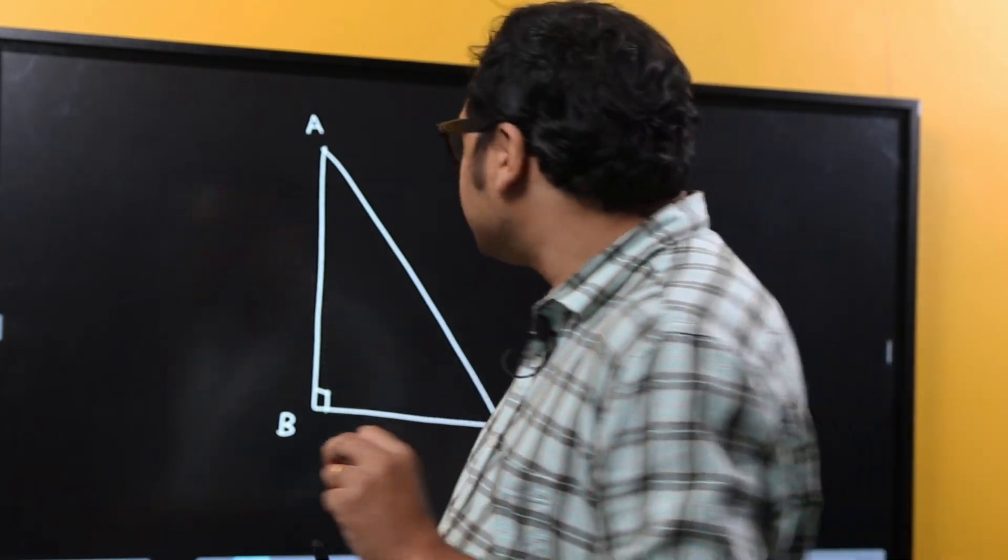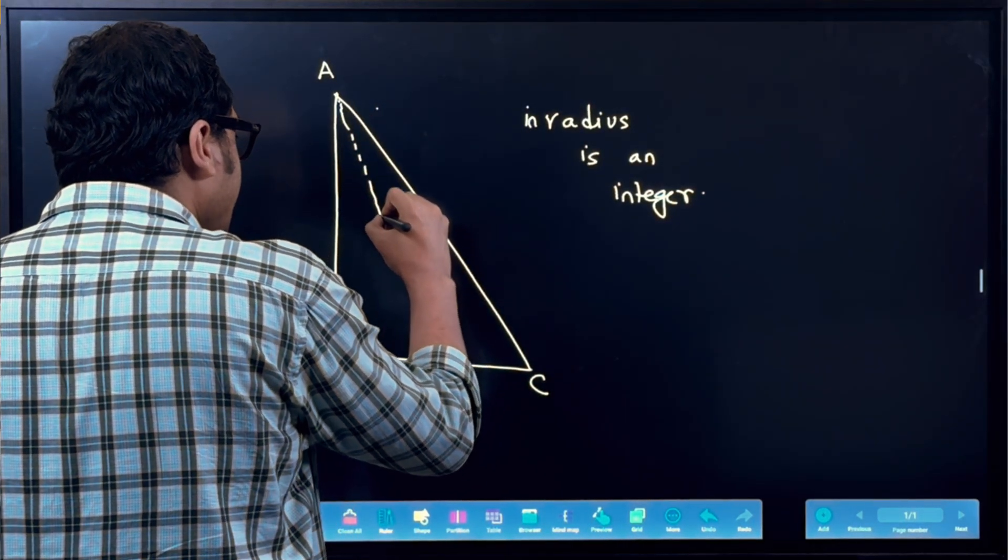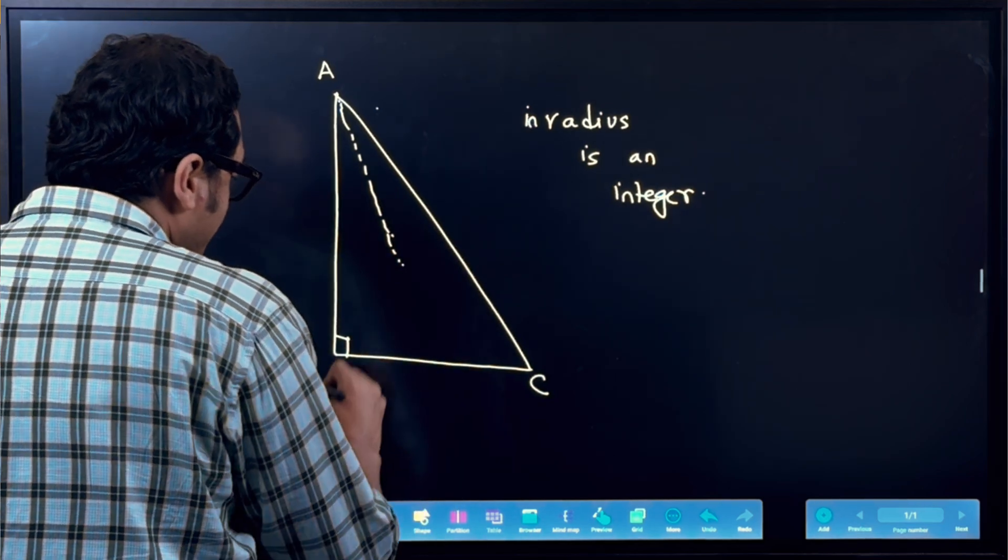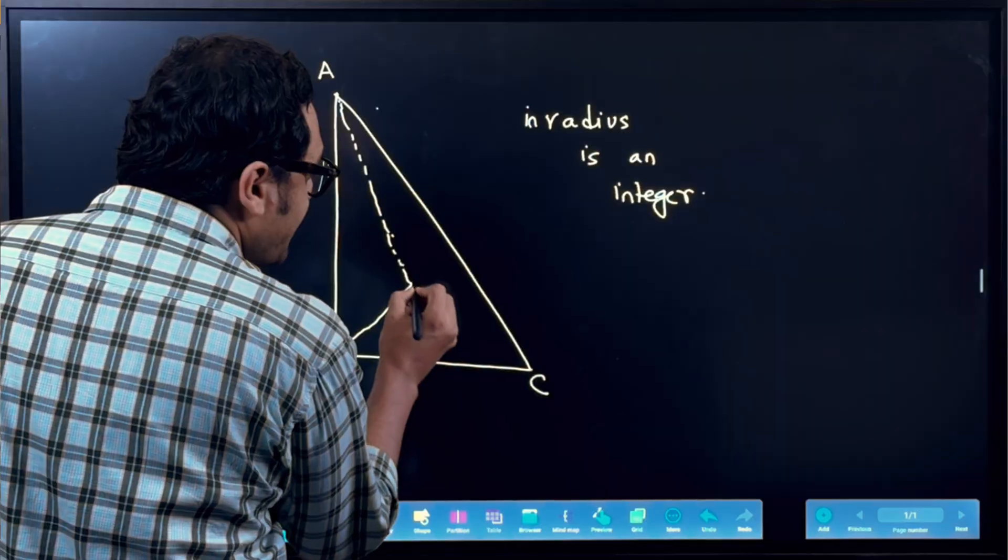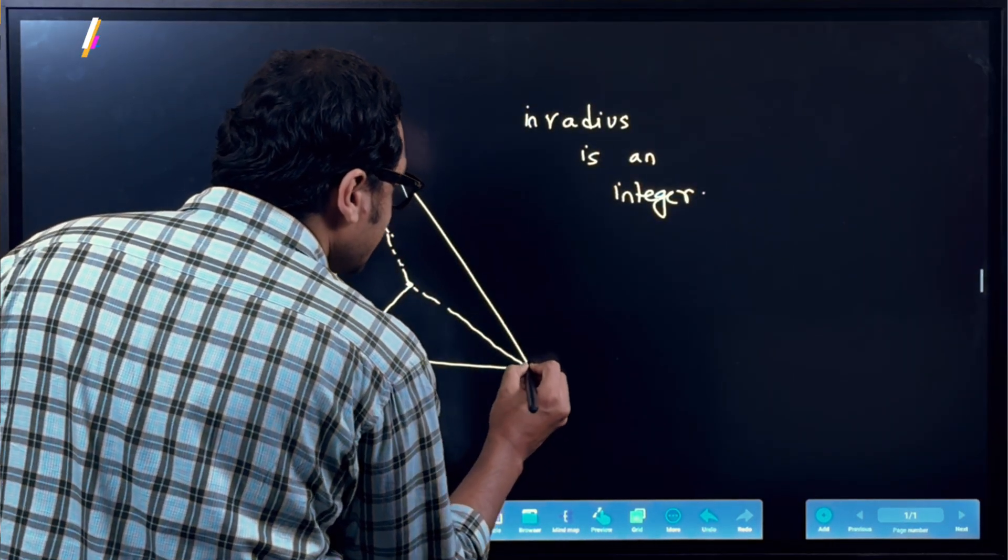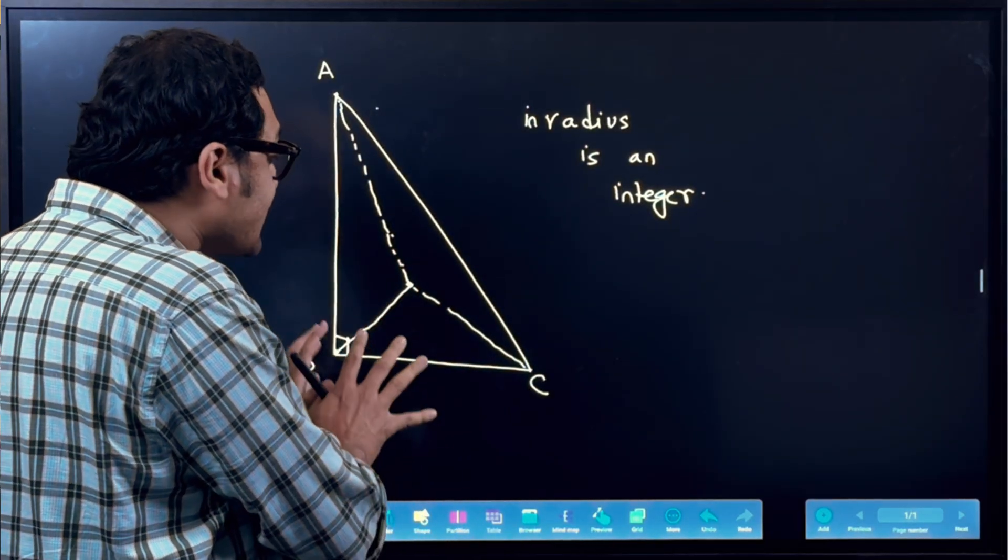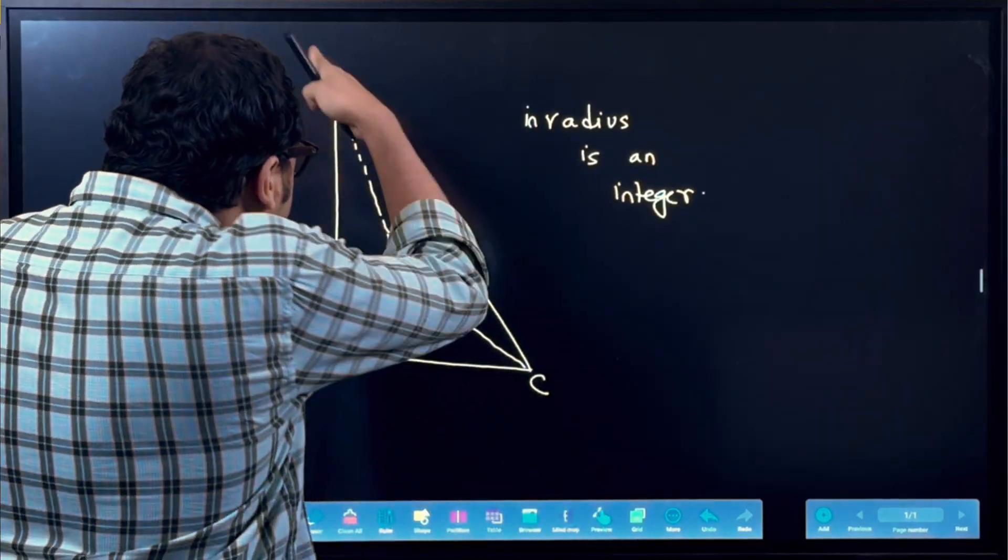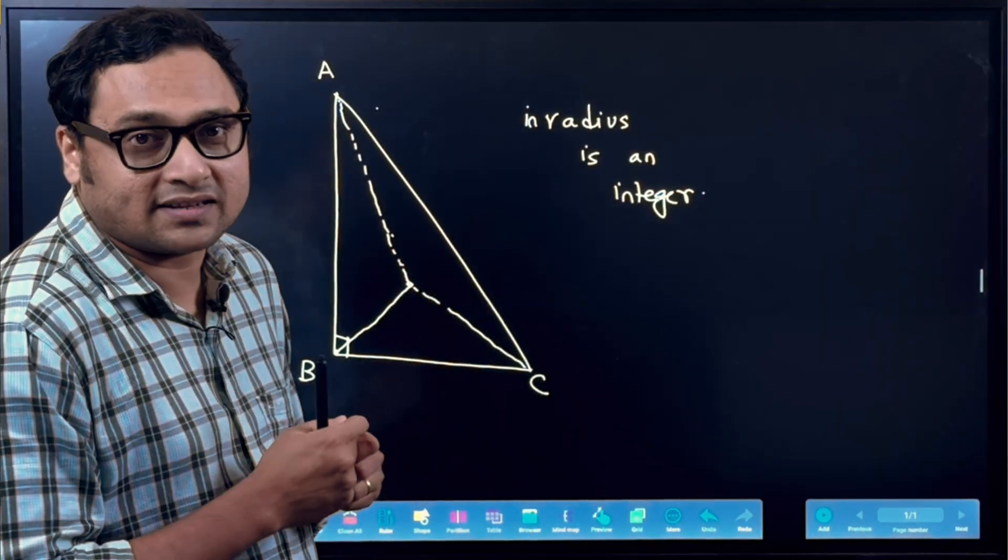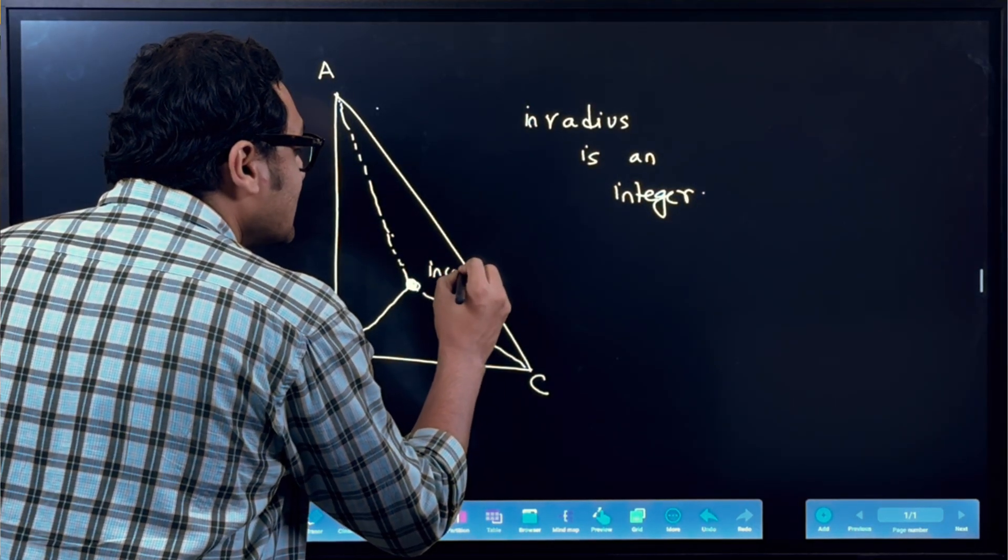It happens so that the angle bisectors of the angles of a triangle all meet at one point. So if I draw an angle bisector of angle A, if I draw the angle bisector of angle B, and if I draw the angle bisector of angle C, the three angles of the triangle, if I draw the angle bisectors of all of them, turns out that all these three lines, they meet at a single point.